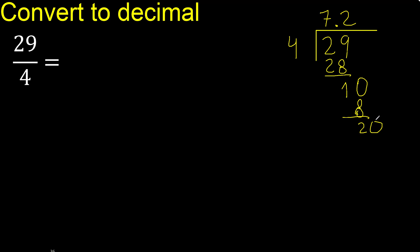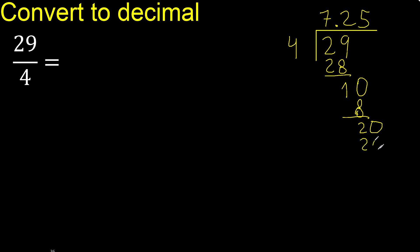Always complete with 0. Decimal point is here. 4 multiplied by 5 is 20. 20 minus 20 is 0. Therefore, finish — the answer is 7.25.